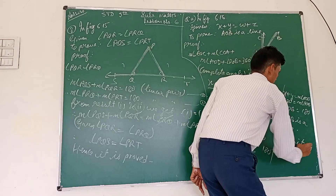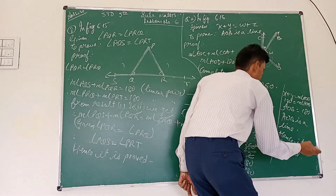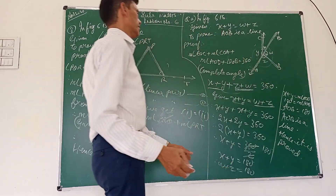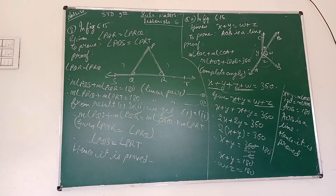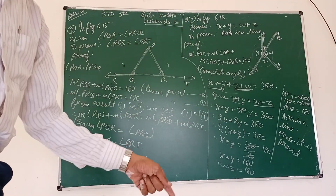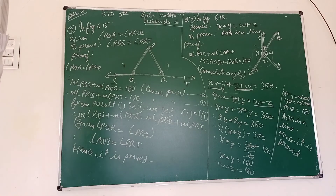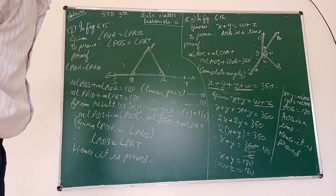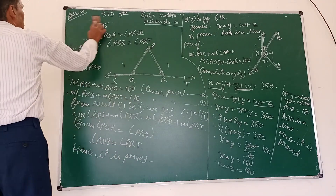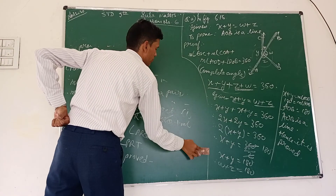Since x plus y equals 180 degrees, that means it lies on a straight line. As explained earlier, 180 degrees is a straight angle. Therefore angle AOB equals 180 degrees because x plus y equals 180. Hence AOB is a straight line. Hence it is proved.